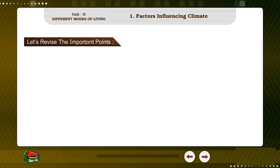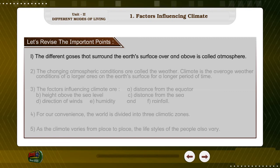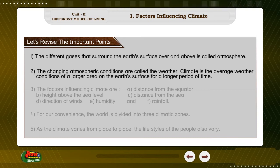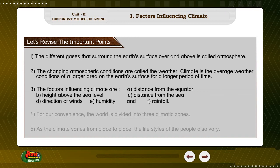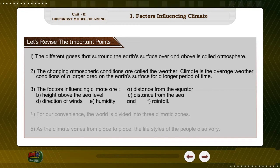Let's revise the important points. 1. The different gases that surround the Earth's surface over and above is called the atmosphere. 2. The changing atmospheric conditions are called weather. Climate is the average weather conditions of a larger area on the Earth's surface for a longer period of time. 3. The factors influencing climate are: A. Distance from the equator, B. Height above the sea level, C. Distance from the sea, D. Direction of winds, E. Humidity, and F. Rainfall.